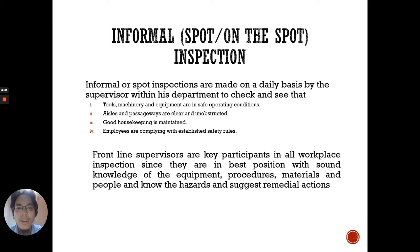Informal or on-the-spot inspections are made on a daily basis by the supervisor within their department to check that: number one, tools, machinery, and equipment are in safe operating conditions; number two, aisles and passageways are clear and unobstructed; number three, good housekeeping is maintained; and number four, employees are complying with established safety rules. The frontline supervisors are the key participants in all workplace inspections since they are in the best position with sound knowledge of the equipment, procedures, materials, and people, and they know the hazards and could suggest remedial actions.